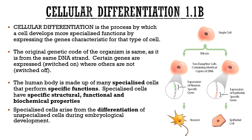Specialized cells have a specific structure, specific function, and specific biochemical properties — what enzymes are produced, what proteins are found on the surface, what proteins are produced inside the cell. There are so many differences between each of these different types of specialized cells. Specialized cells arise from the differentiation of unspecialized cells, and these unspecialized cells we call stem cells.